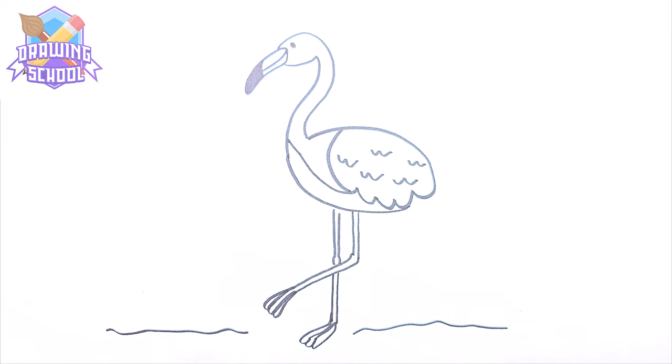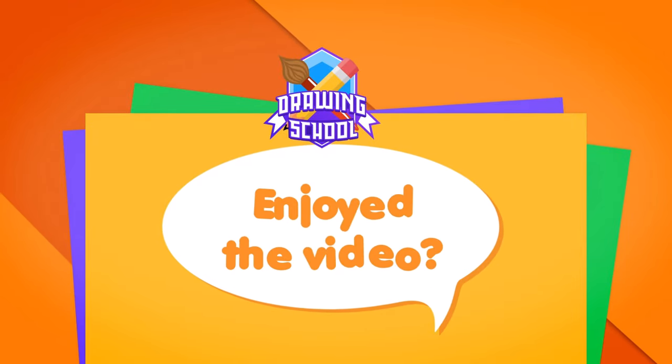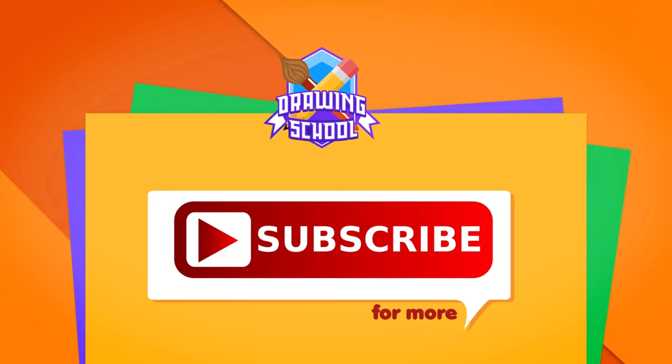We will draw small sinuous lines on the side of it. And that's it. A big and beautiful flamingo. Thank you, dear friends, and I look forward to seeing you in my next episode of Drawing School.